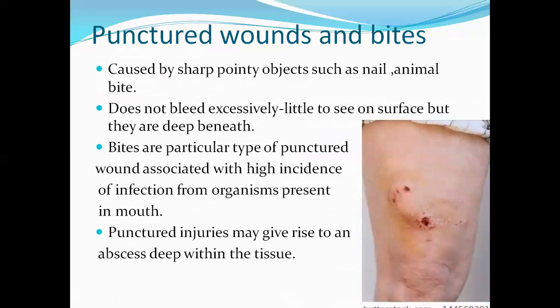Punctured wounds and bites are usually caused by sharp pointy objects such as a nail or an animal bite, since the teeth of an animal are quite sharp. These do not bleed excessively on the surface, but there is significant bleeding within or beneath. There is also risk of infection from organisms present in the animal's mouth, which can lead to a deep abscess within the tissue.